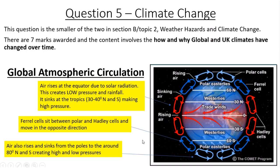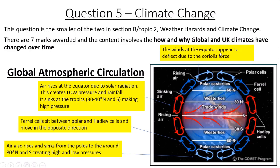Alongside this, you'll notice something called the Coriolis force. This one confuses a lot of people, but don't panic — you don't need to know loads about it. All you need to know is that the Coriolis force is something which makes winds deflect. You don't need to know the wheres or the whys; you just need to know that it causes winds to look like they bend and deflect. That's global atmospheric circulation.